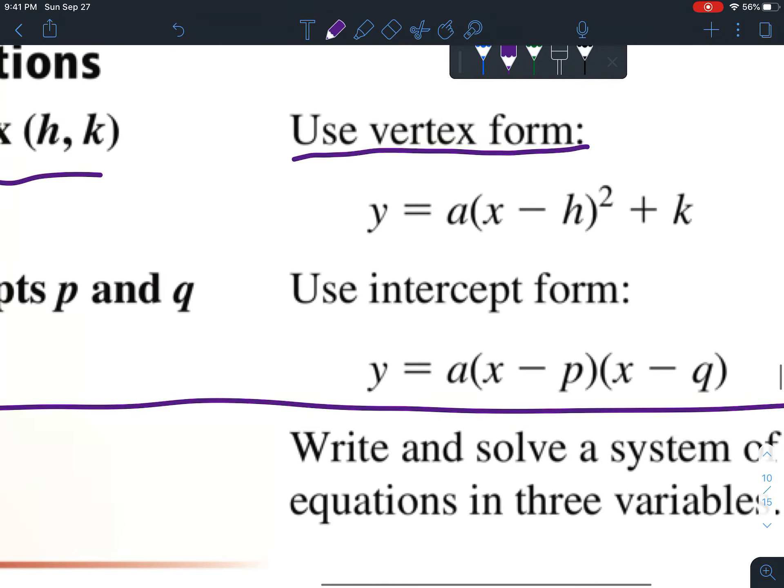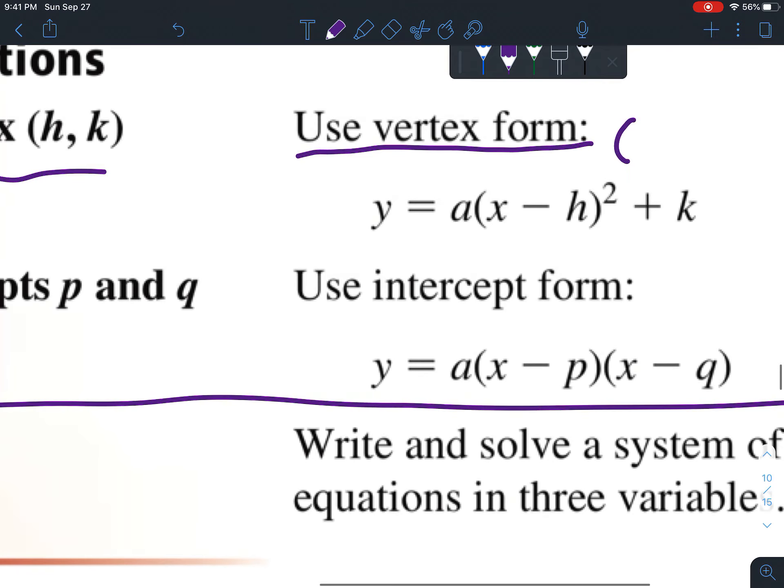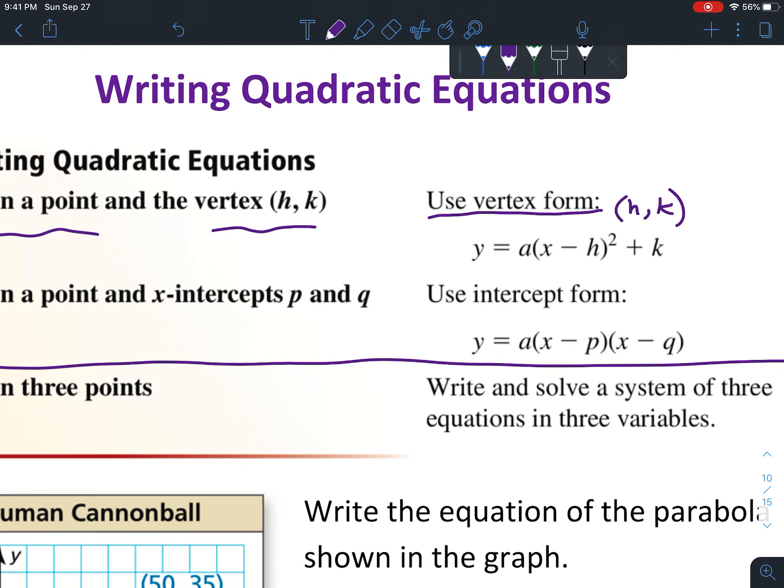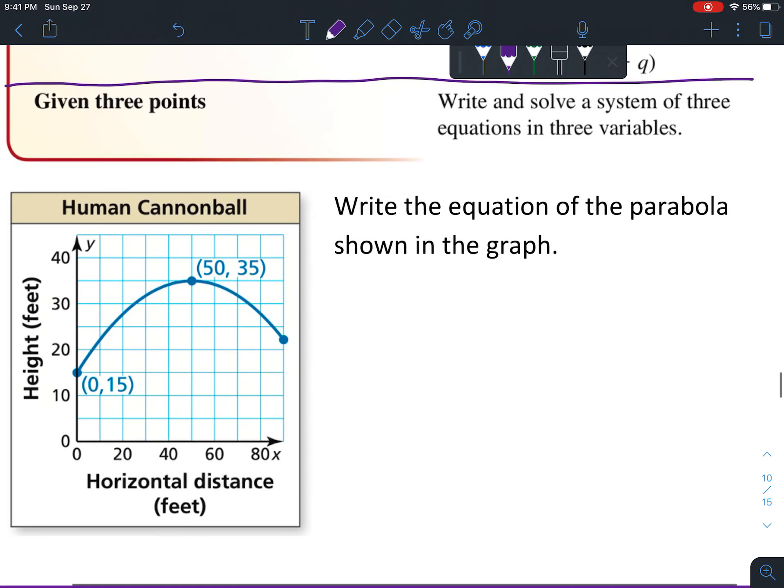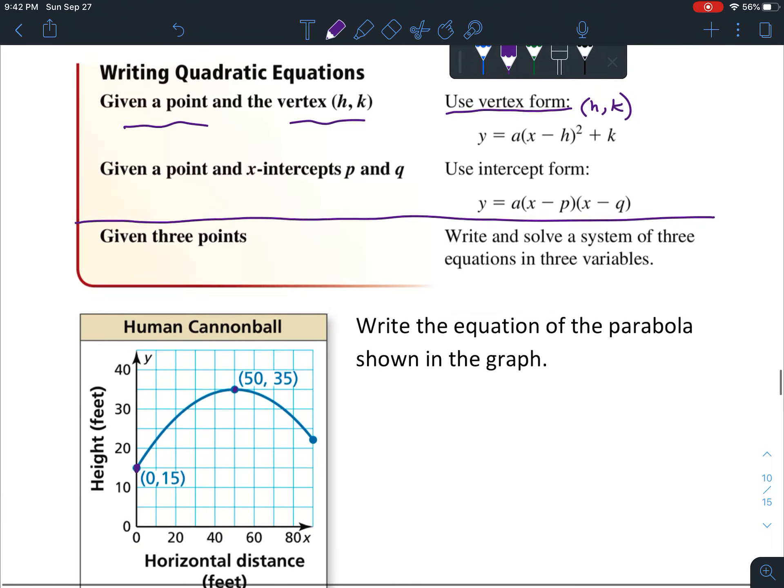This is a quick review - vertex form is where the vertex is (h, k). Let's look at the example: write the equation of the parabola shown in the graph. We're given the vertex of (50, 35) and another random point on the parabola.